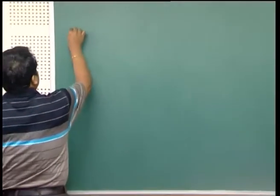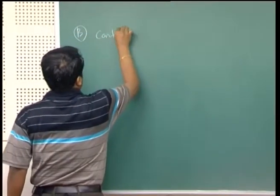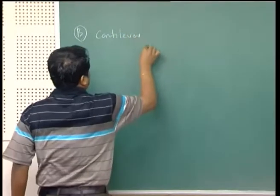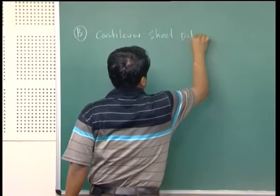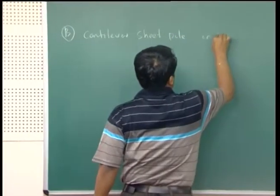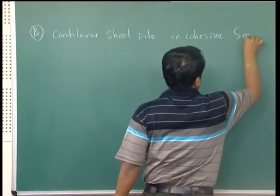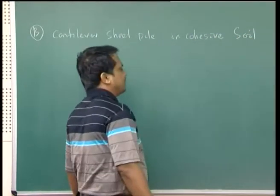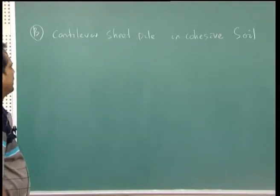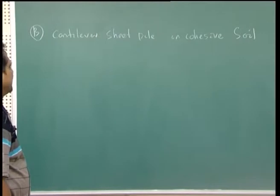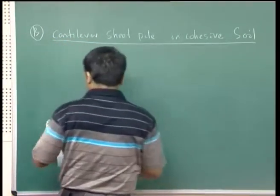The next part is cantilever sheet pile in cohesive soil. Earlier we finished the derivation and solved an example for cantilever sheet pile in cohesionless soil. Now we move to cantilever sheet pile in cohesive soil.